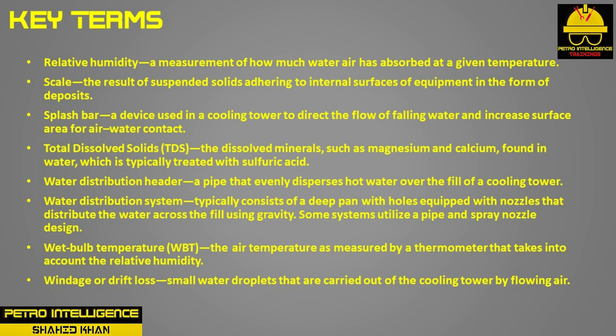Water distribution header is a pipe that evenly disperses hot water over the fill of a cooling tower. Water distribution system typically consists of a deep pan with holes equipped with nozzles that distribute water across the fill using gravity; some systems utilize a pipe and spray nozzle design. Wet bulb temperature (WBT) is the air temperature as measured by a thermometer that takes into account the relative humidity. Windage or drift loss is small water droplets carried out of the cooling tower by flowing air.